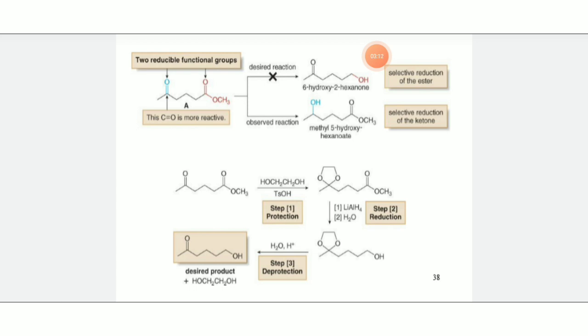First, only the ketone group is reduced. We need only the ester group to be reduced. Therefore, we use a protecting group. Ethylene glycol is used as a protecting group. Ethylene glycol protects the ketone group to form a five-member ring.